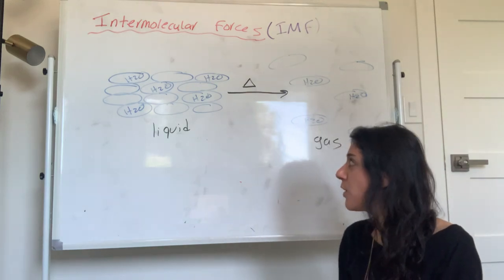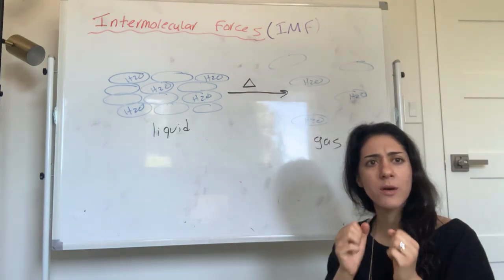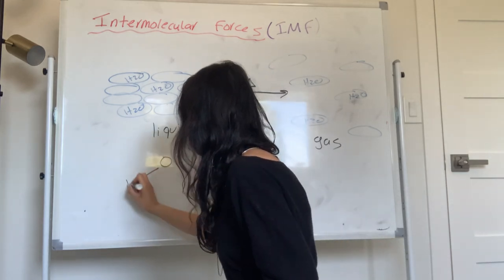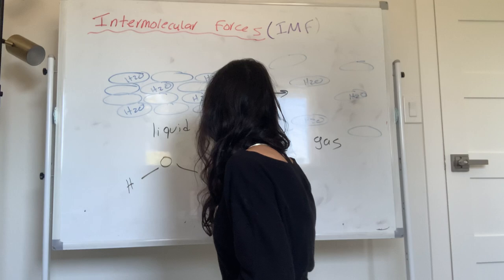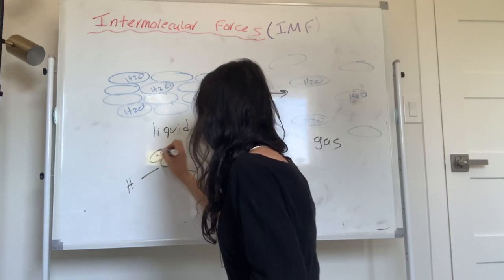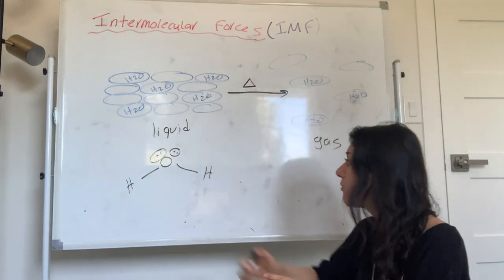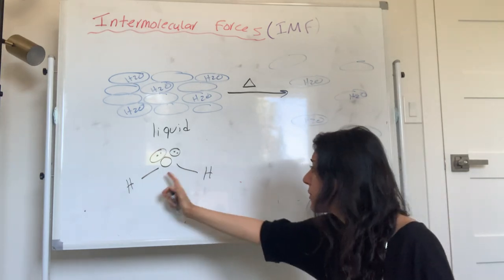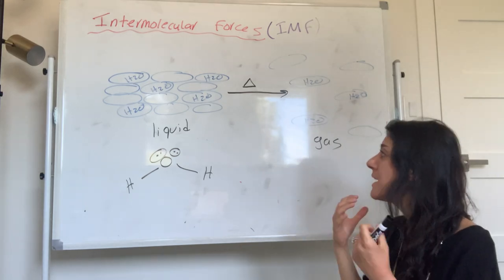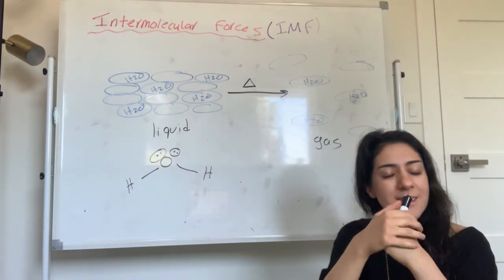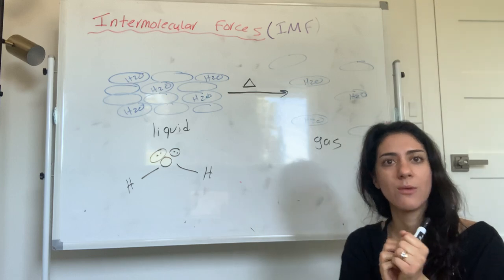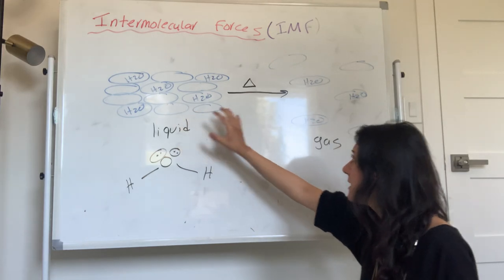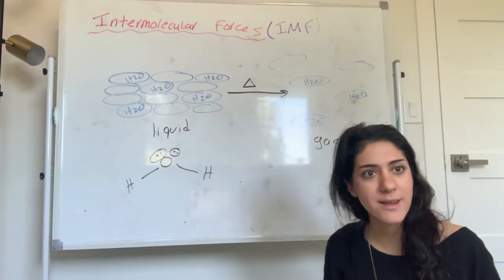You are not breaking any covalent bonds. Here's the Lewis structure — the covalent bond, you're not breaking these. These are strong. But when you heat up water, you are breaking the forces between the water molecules — the intermolecular forces that are holding them together — so that it can go to the gas phase.